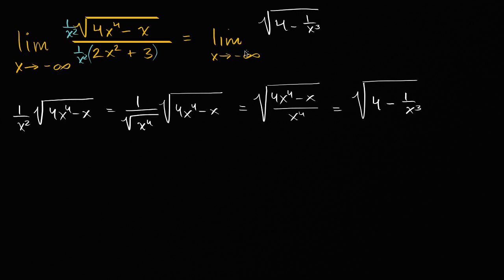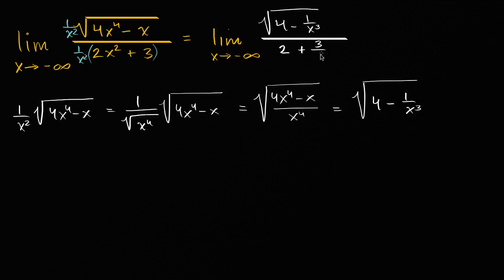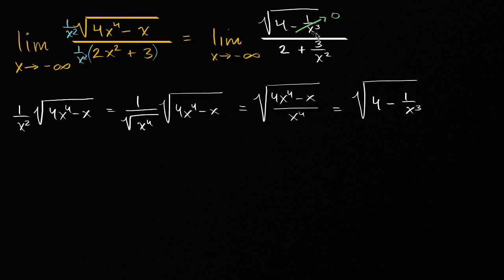The denominator is going to be: you divide two x squared by x squared, you're just left with two, and then three divided by x squared gives three over x squared. Now as we approach negative infinity, one over x to the third is going to approach zero, and three over x squared is also going to approach zero — we're dividing by larger and larger values.